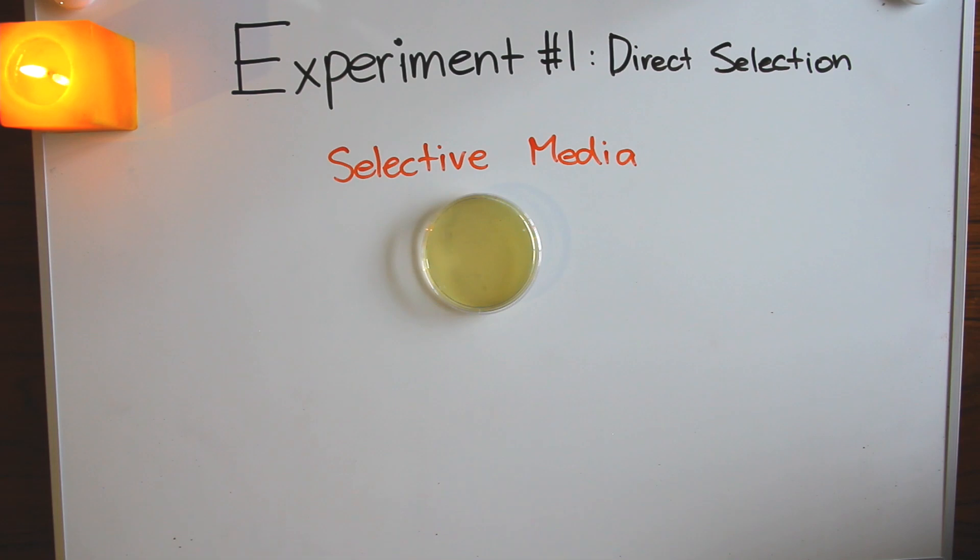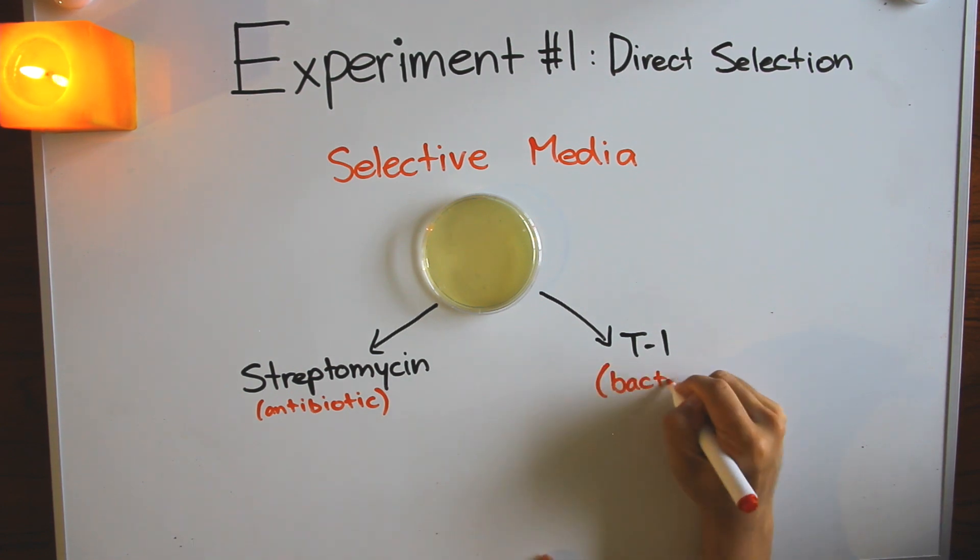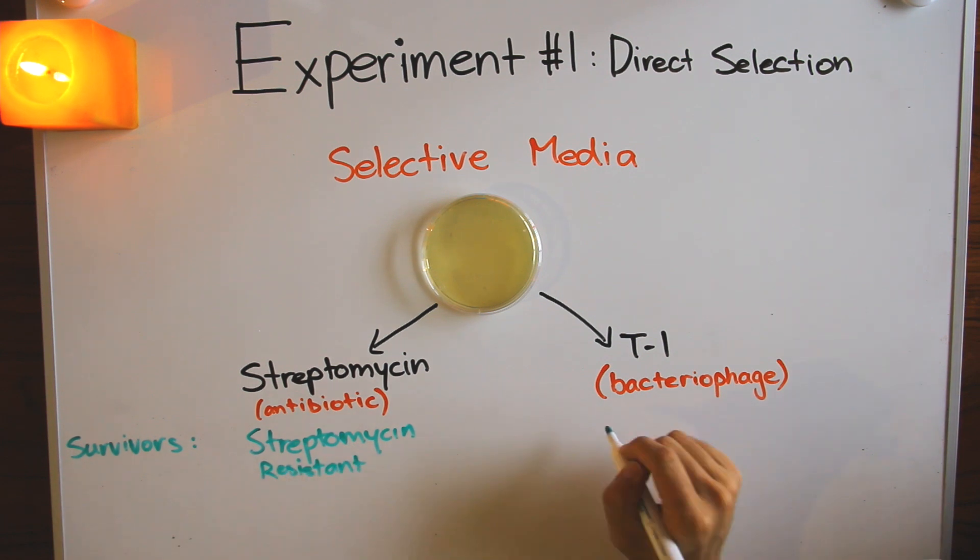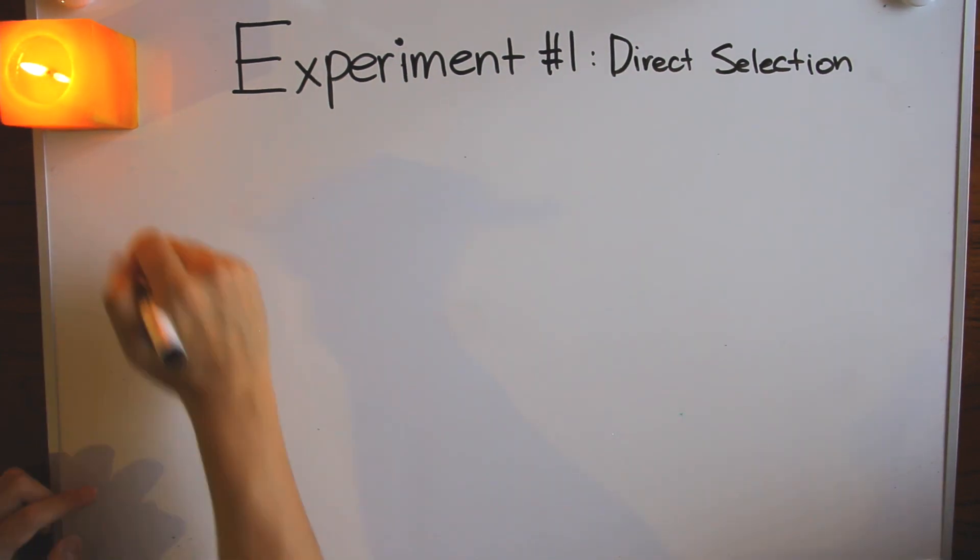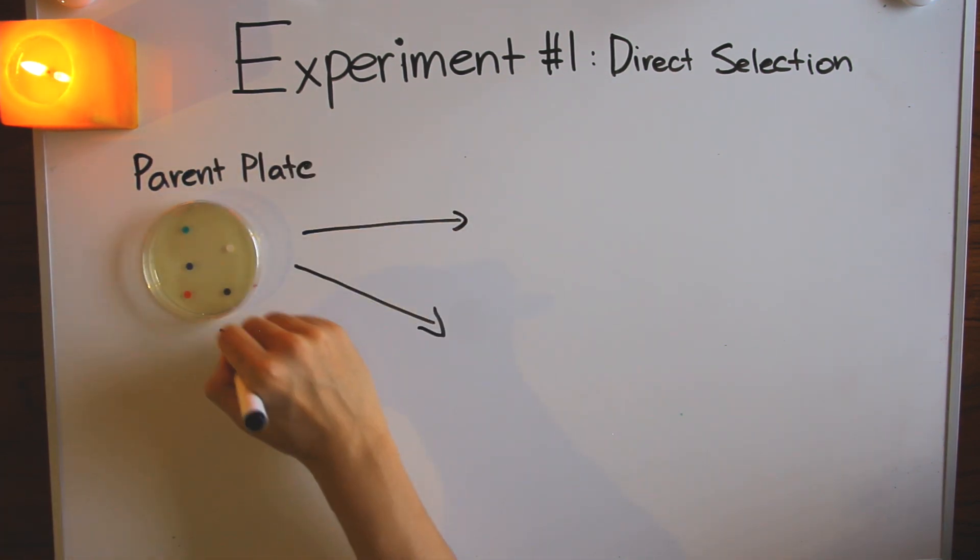Selective media is basically any growth medium which isolates a specific trait. In this case, agar plates sprinkled with streptomycin, an antibiotic, and agar plates coated with T1 bacteriophage were used. So the colonies which survived must have been streptomycin or T1 resistant. Now imagine we replicated the parent plate onto selective media multiple times. What would we see?